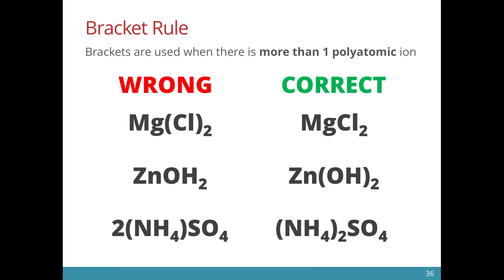Finally, the number of ions is denoted as a subscript rather than a coefficient in the front. So when there are two ammonium ions, we put a two as a subscript after the ion itself. That's all for this video. Hope you have a better idea on how to write the chemical formula of ionic compounds.